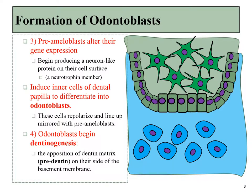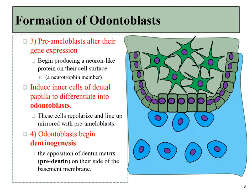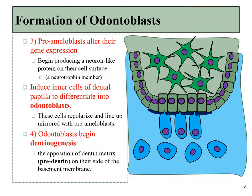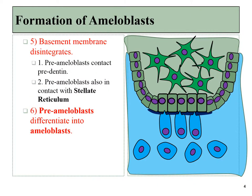It's this neurotrophin made by the pre-ameloblasts that comes into contact with nearby neuromesenchymal stem cells and induces them to differentiate into odontoblasts, and they will begin secreting pre-dentin. At this point, the basement membrane just underneath the epithelial layer disintegrates, and that allows the pre-ameloblasts to come into contact with that newly formed pre-dentin. That's the first signal. The pre-ameloblasts must also receive signals from the stellate reticulum, and if you get both of those signals, the pre-ameloblasts differentiate into full-blown ameloblasts, and they will begin secreting enamel.